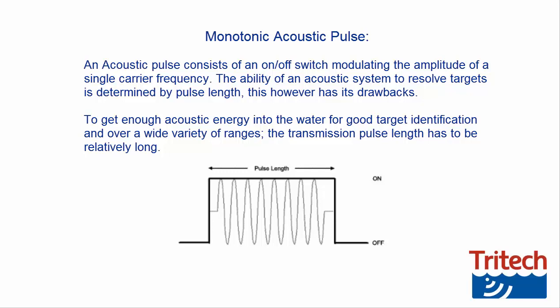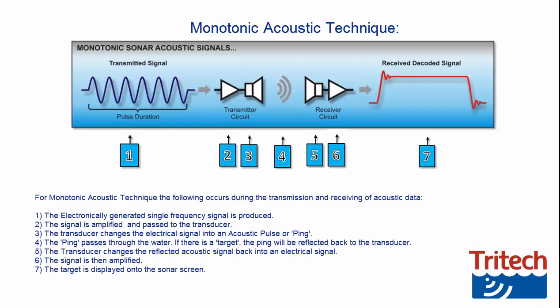This, however, has its drawbacks. To get enough acoustic energy into the water for good target identification and over a wide variety of ranges, the transmission pulse length has to be relatively long. For monotonic acoustic technique, the following occurs during the transmission and receiving of acoustic data.